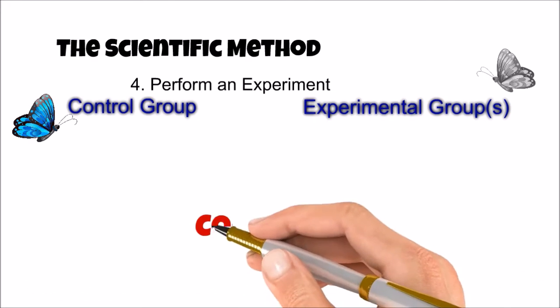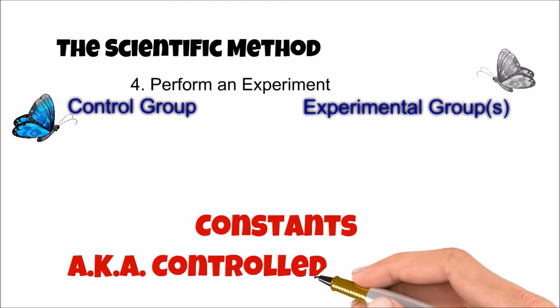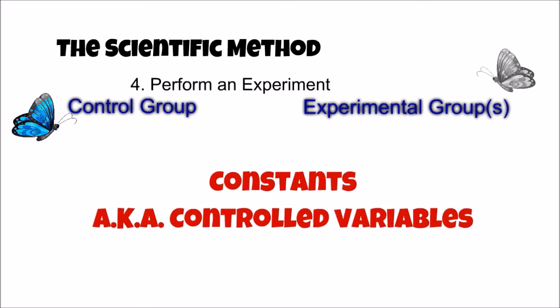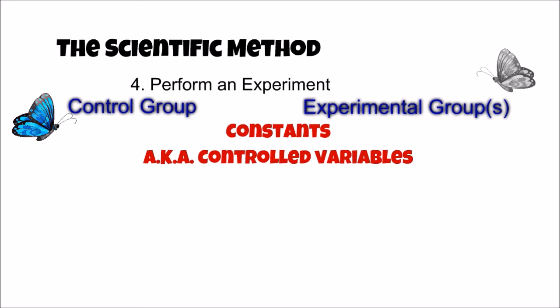An important part of experimental design are constants, also known as controlled variables. Ideally, there should be only one difference between the experimental and control groups, and that's the independent variable. Other possible variables are controlled by scientists to be sure the data collected is only the result of the independent variable being tested. So, constants and controlled variables are factors that are kept the same during the experiment.